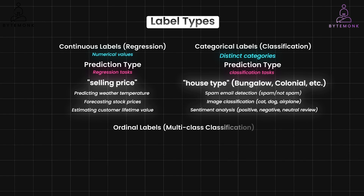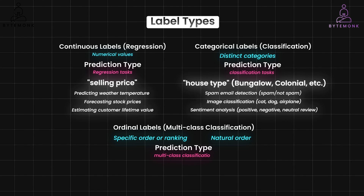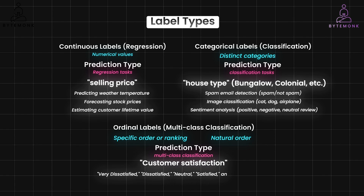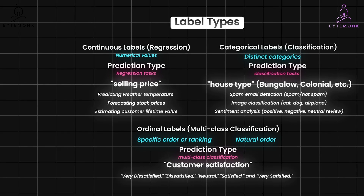And finally, ordinal labels, or multi-class classification, represent categories with a specific order or ranking. There is a natural order to the categories, unlike nominal categorical labels which have distinct options without inherent order. Ordinal labels can be used for multi-class classification tasks, where the model predicts the class a new data point belongs to considering the order of the categories. For example, an ordinal label could be customer satisfaction with levels like very dissatisfied, dissatisfied, neutral, satisfied, and very satisfied.